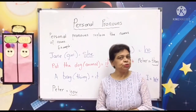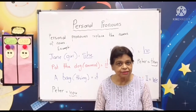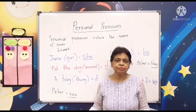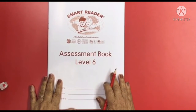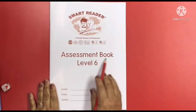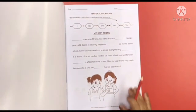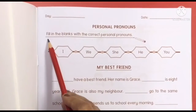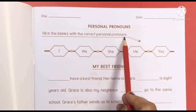Alright children, how did you find the video? I'm sure it was good and you now understand the lesson better. Let's do some exercises from your book. Please have your assessment book, level 6, in front of you and turn to page 1 — Personal Pronouns: Fill in the blanks with the correct personal pronouns.